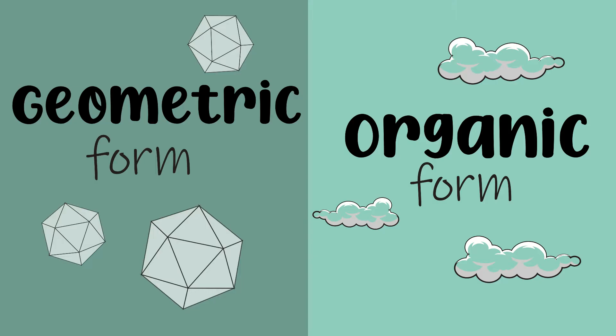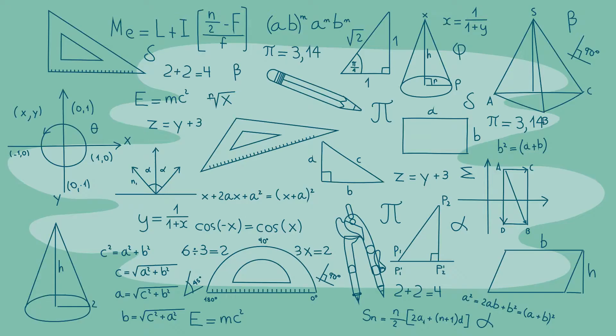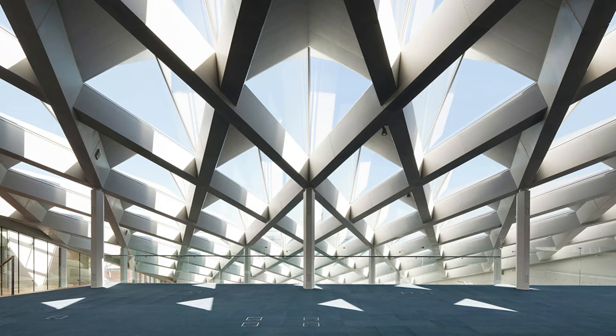As artists, we use all kinds of forms, but there are two main categories: geometric form and organic form. Geometric forms are forms that can be constructed using geometry, such as pyramids, spheres, cones and cubes.